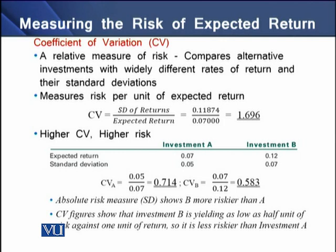In our example on the screen, we have a standard deviation of 0.11874 and an expected return of 0.07. The coefficient of variation comes to 1.696. This means that to earn one unit of expected return, we have to bear 1.69 units of standard deviation or riskiness. So the riskiness of this investment is higher than the expected return, meaning the investment is highly risky.